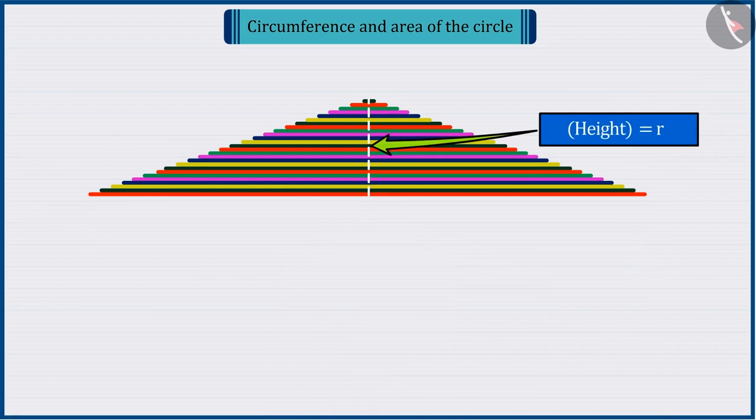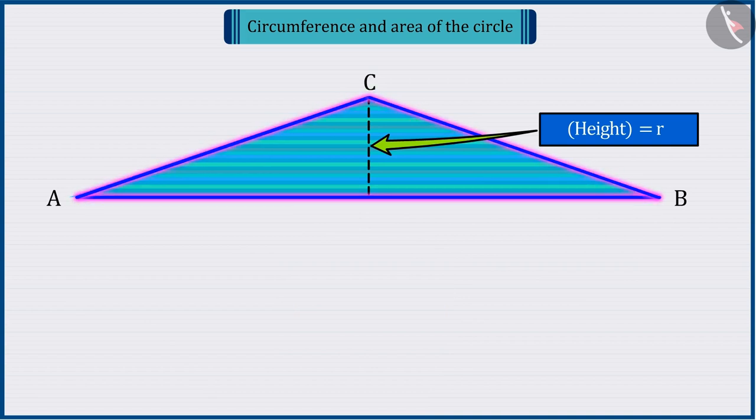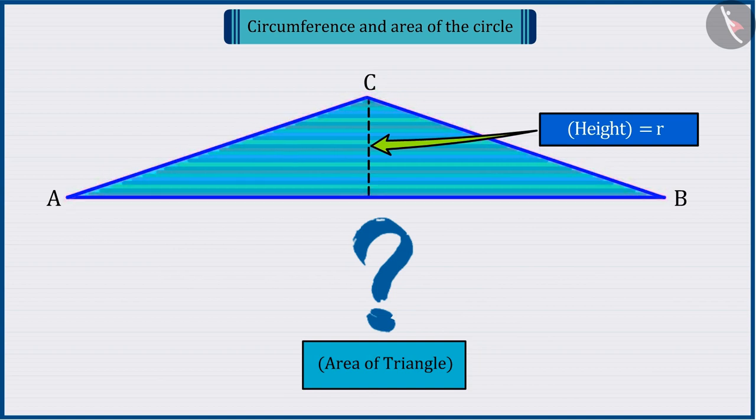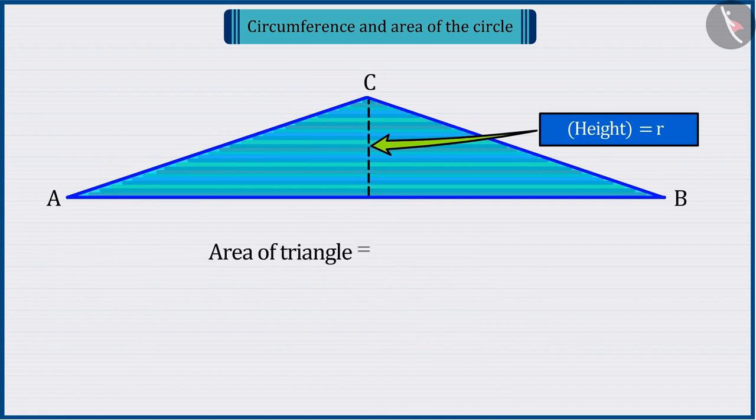Observing this shape carefully, we can say that this shape is a triangular one. So can you tell how we can find the area of this triangular shape? Well done! Since we know that the area of a triangle is 1 upon 2 multiplied by the base multiplied by the height,